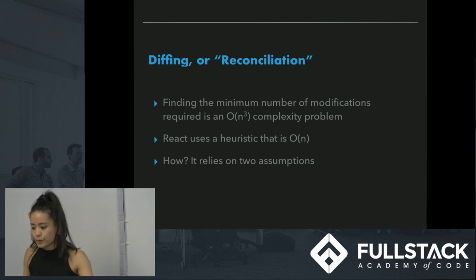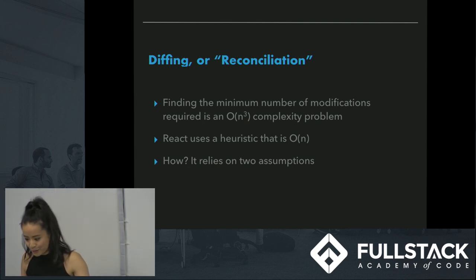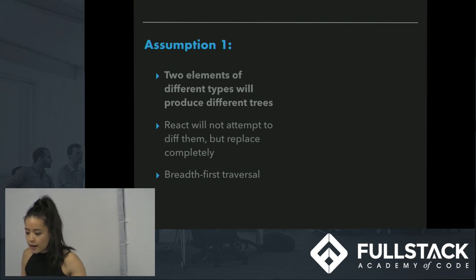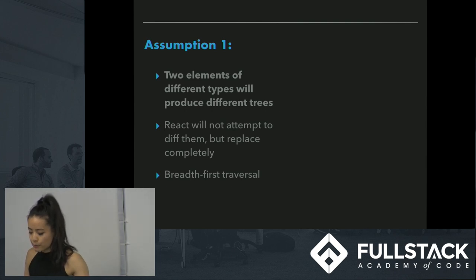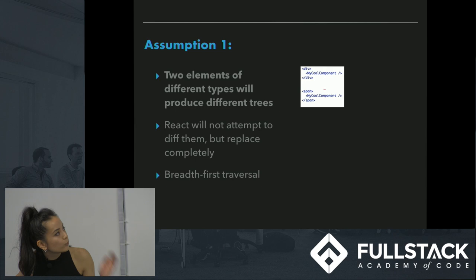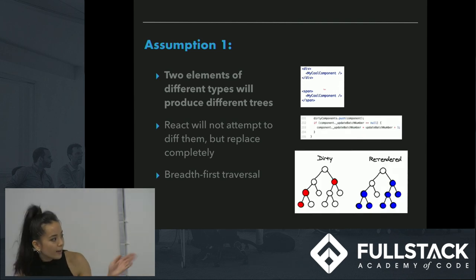How does reconciliation work? The problem of finding the minimum number of modifications is an O(N³) complexity problem, but React uses a heuristic to approximate it that's O(N), relying on two assumptions. The first assumption is that two elements of different types will produce different trees. When diffing two trees, React first compares two root elements. If the root elements have different types, React tears down the old tree with all its children and builds a new one from scratch. So if you change a div to a span, it will re-render everything in that subtree, mark it as dirty, and re-render that part. It traverses the tree breadth-first, level by level, replacing the entire subtree.